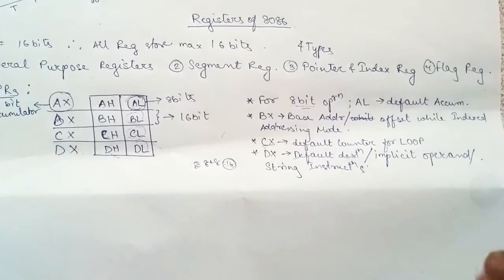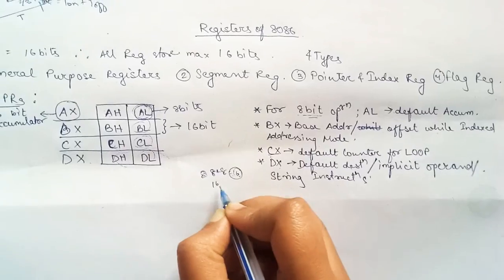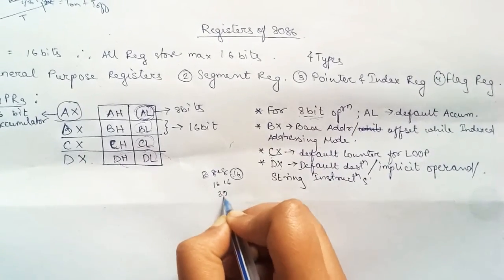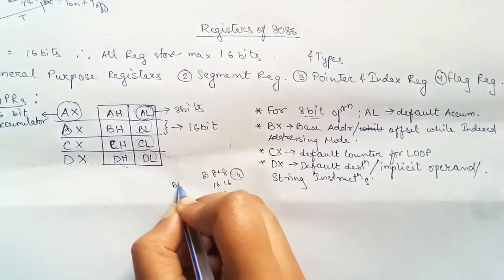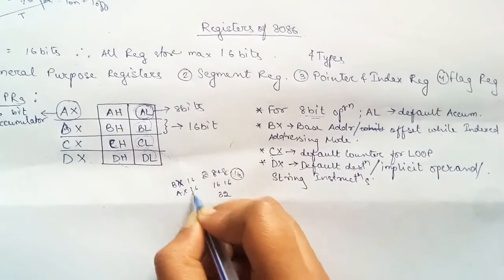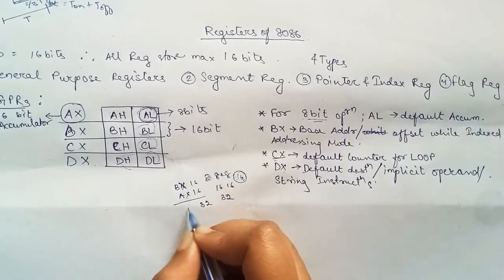Sorry, if we multiply two 16 bits, resultant will be 32 bit. Suppose we are multiplying BX and AX. This is 16-bit, this is 16-bit. The resultant is 32 bits.